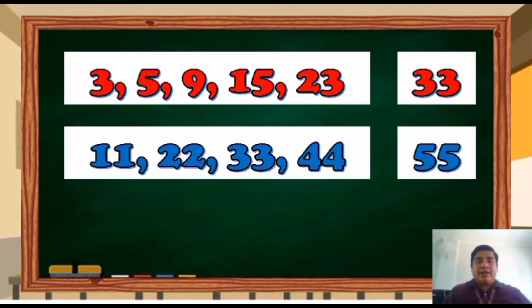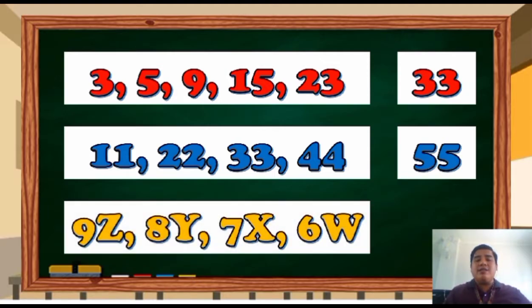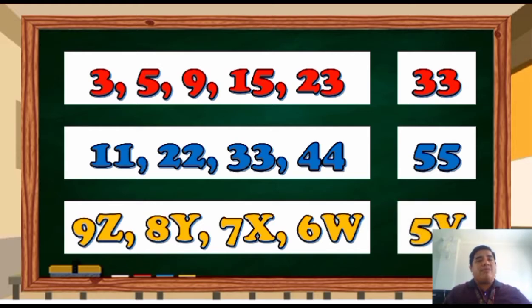What about this? 9, Z, 8, Y, 7, X, 6, W. The next element is a 5, V. Because the number decreases as well as the arrangement of the alphabet from the end. So, that is about the patterns and sequences. I hope that is very easy for you now to recognize or determine the next element in a pattern or a sequence.